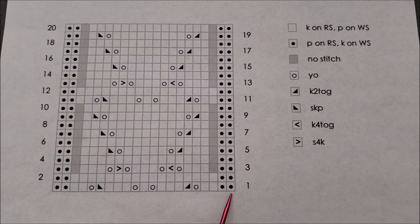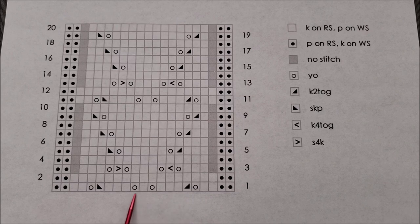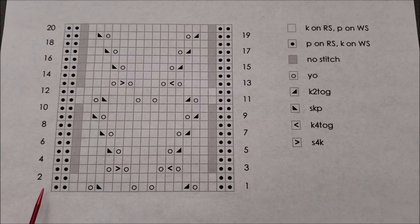So, in this chart, rows 1, 2, 11, and 12 are worked across 21 stitches. There need to be 21 squares across the chart to represent all of the stitches in those rows.